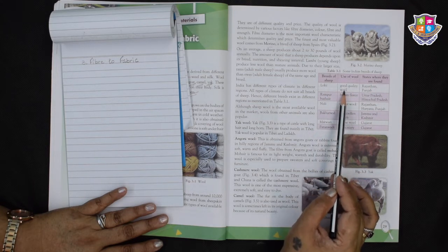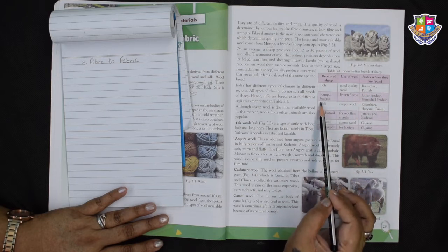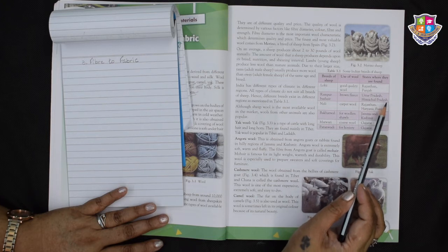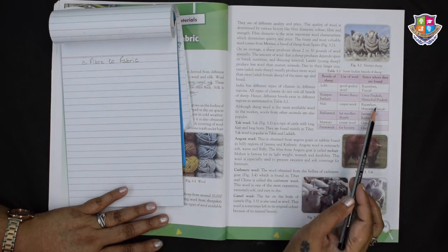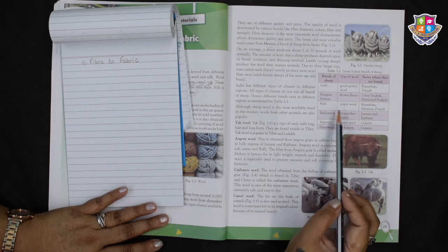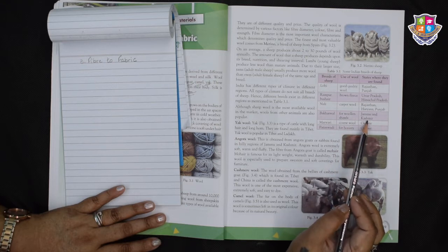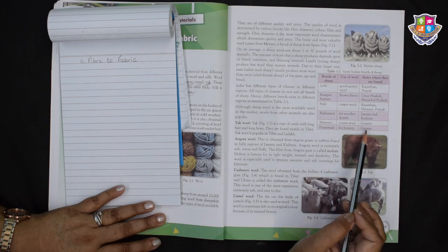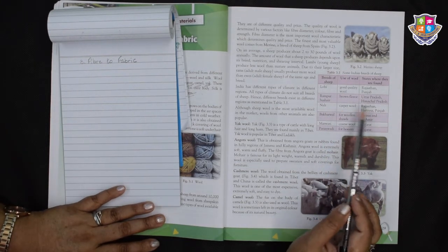Hence different breeds exist in different regions as mentioned in the table 3.1. This is Lohi, good quality wool found in Rajasthan and Punjab. This is Rampur bush hair, brown fleece in Uttar Pradesh and Himachal Pradesh. This is Nali, carpet wool in Rajasthan, Haryana, Punjab. And this is Bakarwal for woolen shawls in Jammu and Kashmir.